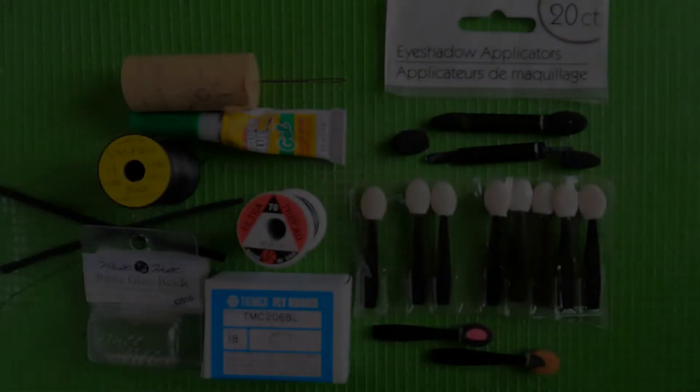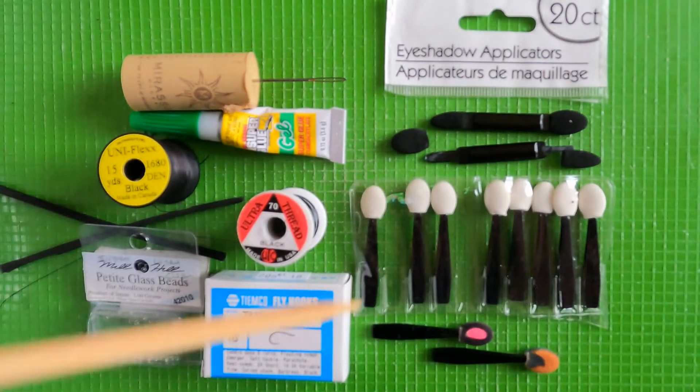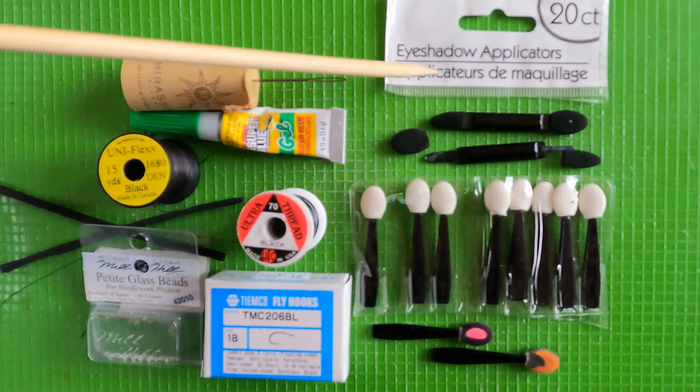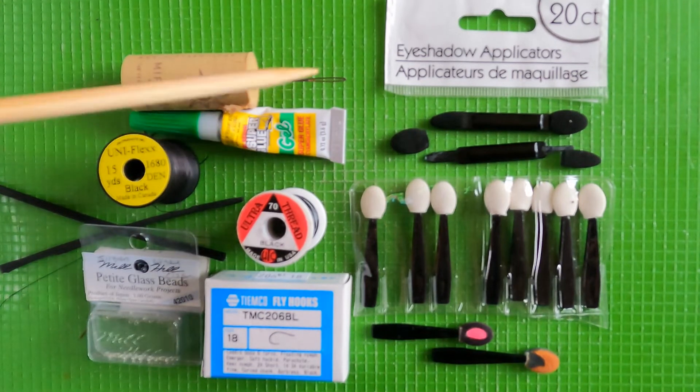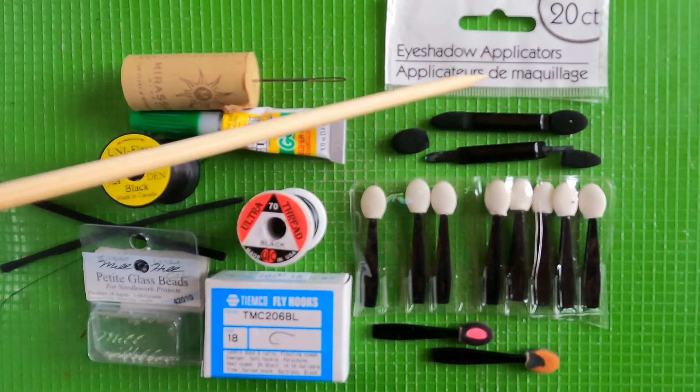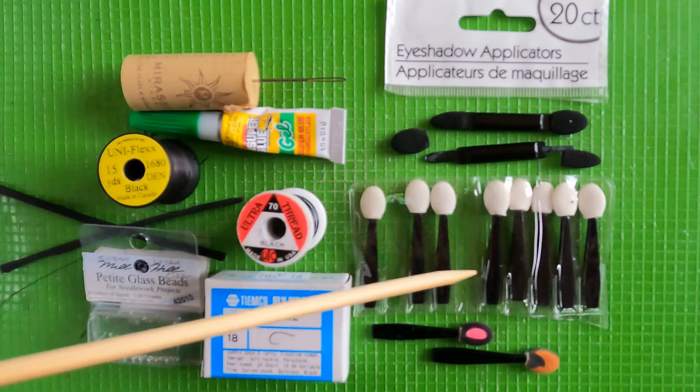These are all the materials you need to tie the beetle. I'm only going to go over the eyeshadow applicators here; the rest are used in the fly tying video. The black applicators I get from Amazon, the white ones from the dollar store.